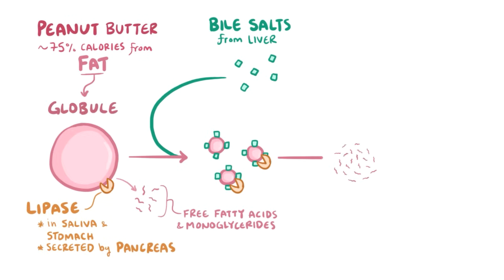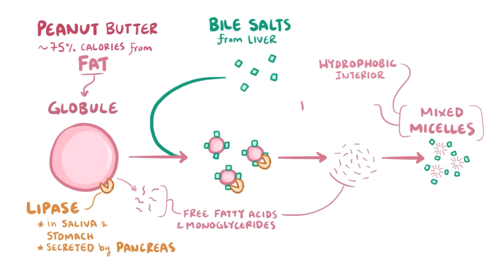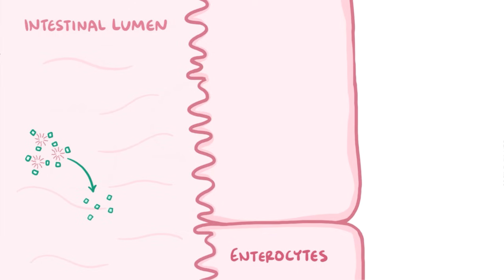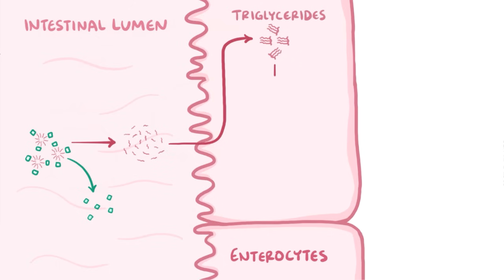Once the triglycerides are broken down into monoglycerides and free fatty acids, these self-assemble into mixed micelles, which have a hydrophobic interior and a hydrophilic or water-loving exterior. The micelles glide through the watery environment of the intestinal lumen and reach the enterocytes in the intestinal wall. When they get to the enterocytes, the micelles release the fatty acids and monoglycerides, which diffuse into the enterocyte. Inside the enterocyte, the fatty acids and monoglycerides reassemble into triglycerides.